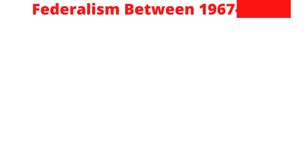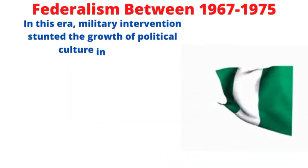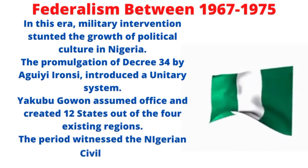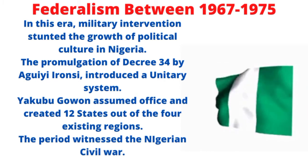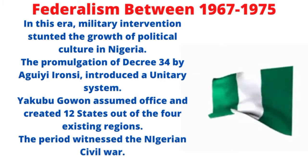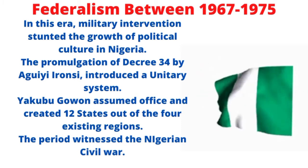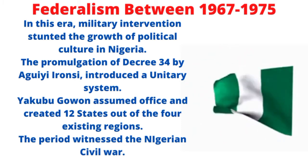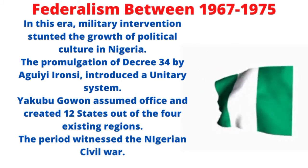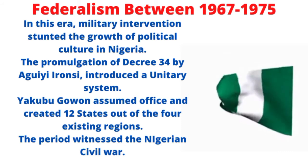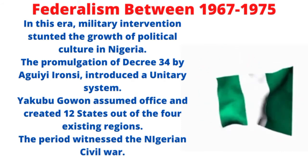Now let's look at federalism between 1967 and 1975. This era was the era of military intervention. First, Aguiyi-Ironsi made Decree 34 in 1966, which introduced a unitary system. When Yakubu Gowon took over office, he created 12 states out of the existing four regions. This period also witnessed the Nigerian civil war.